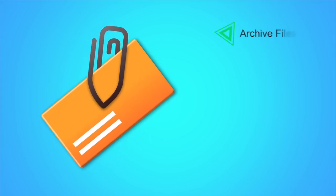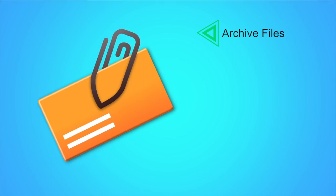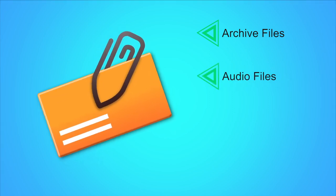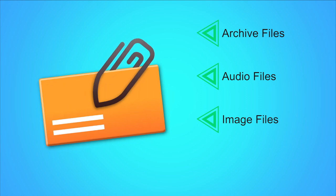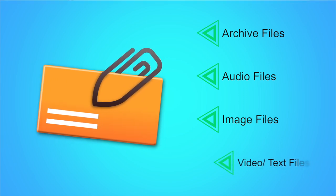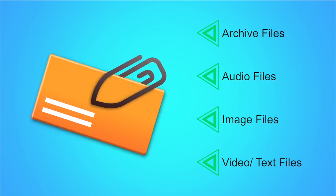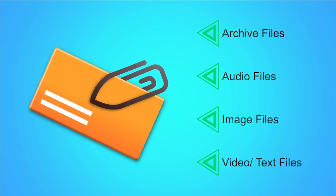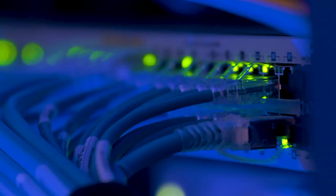Almost all email services allow attachments like archive files (for example zip, rar, tar, gzip files), audio files like mp3, mpeg, wav, image files like jpeg, jpg, png, gif, bitmaps, and video files like webm, mpeg, 3gp, movies, avi, wmv, flv, along with text files. All the email services can be used only when the user's system is connected to the internet.